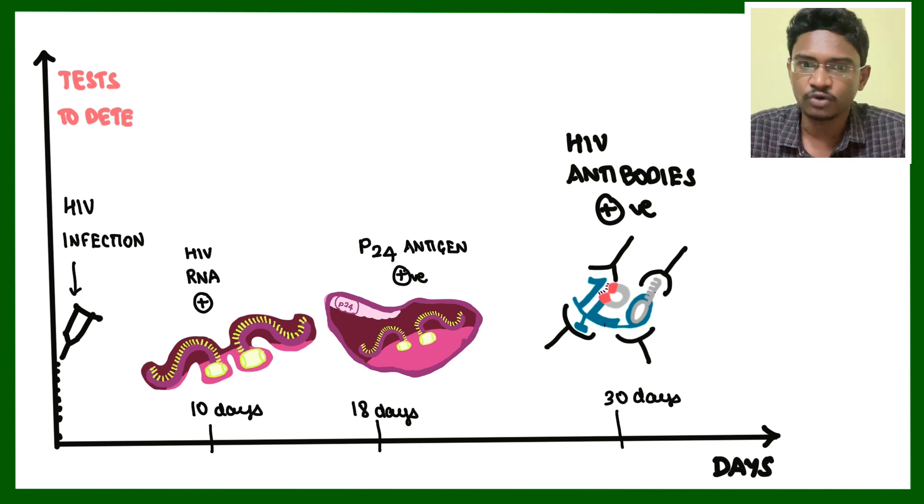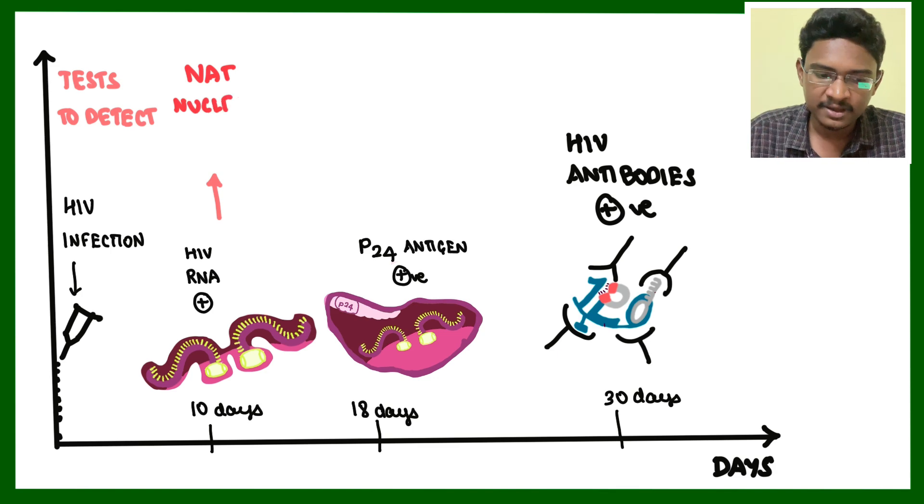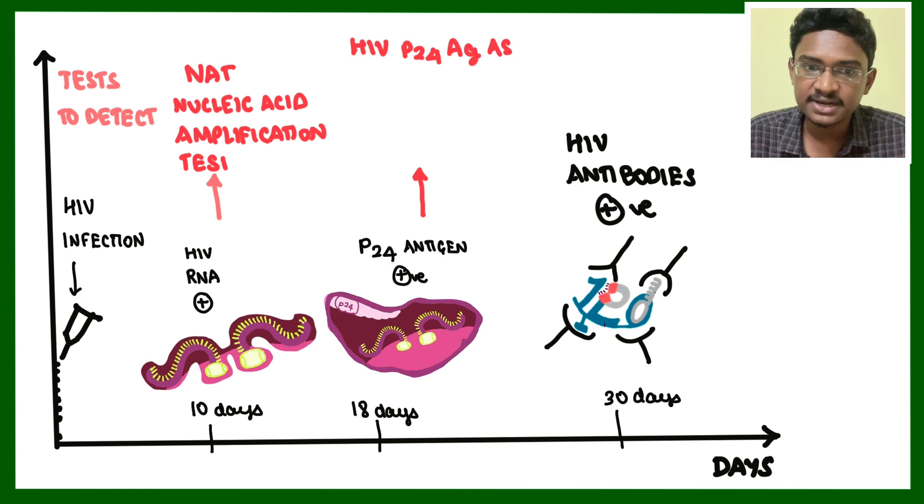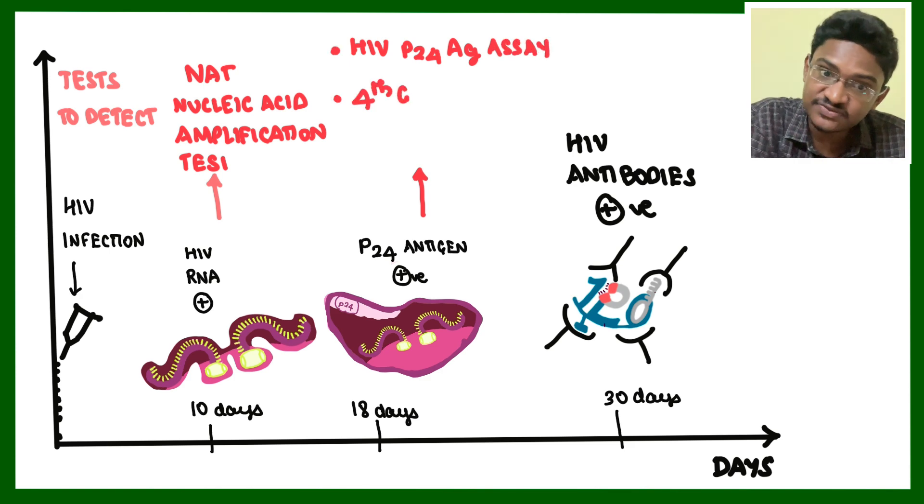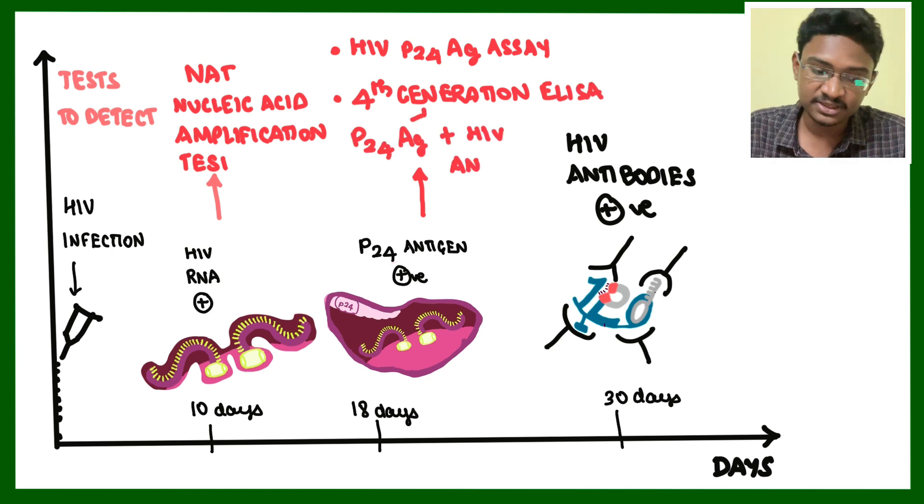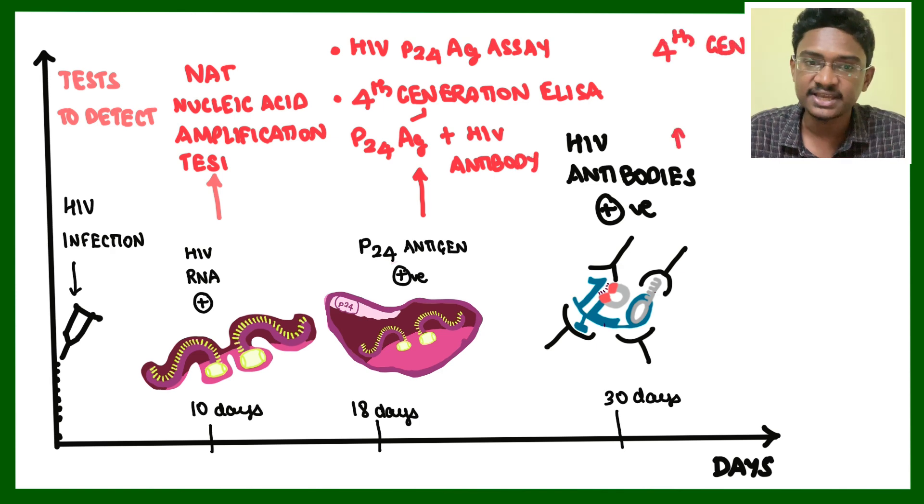Tests involved in detection of HIV: HIV RNA nucleic acid amplification test, HIV p24 antigen capture, and fourth generation ELISA detects antibody as well as p24 antigen. This is why fourth generation ELISA is that much preferred.